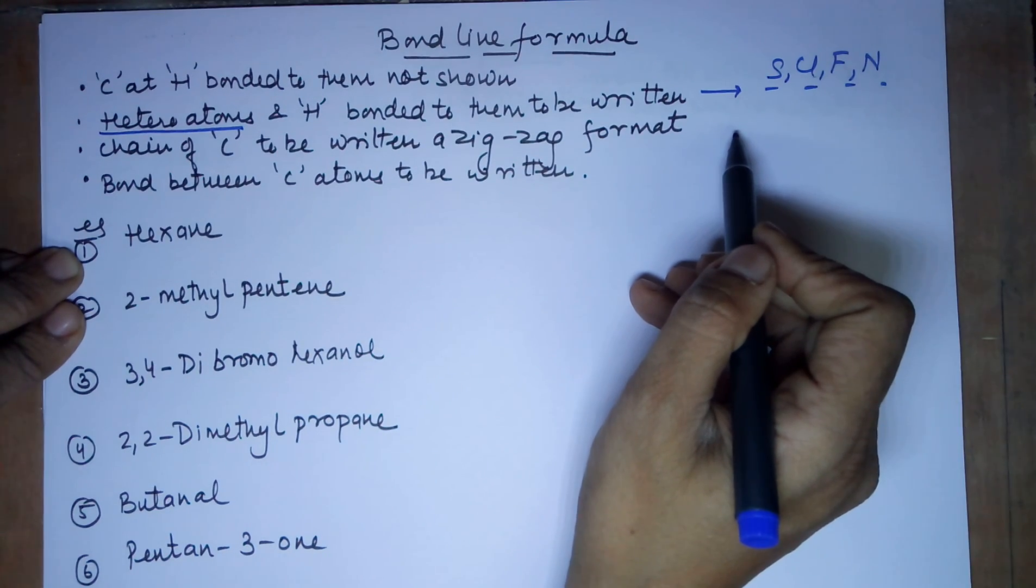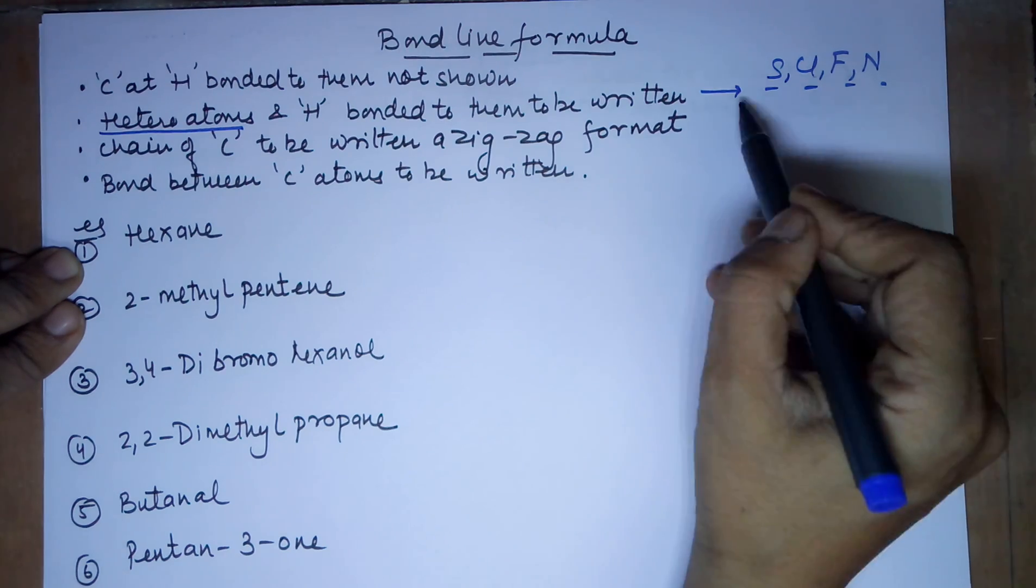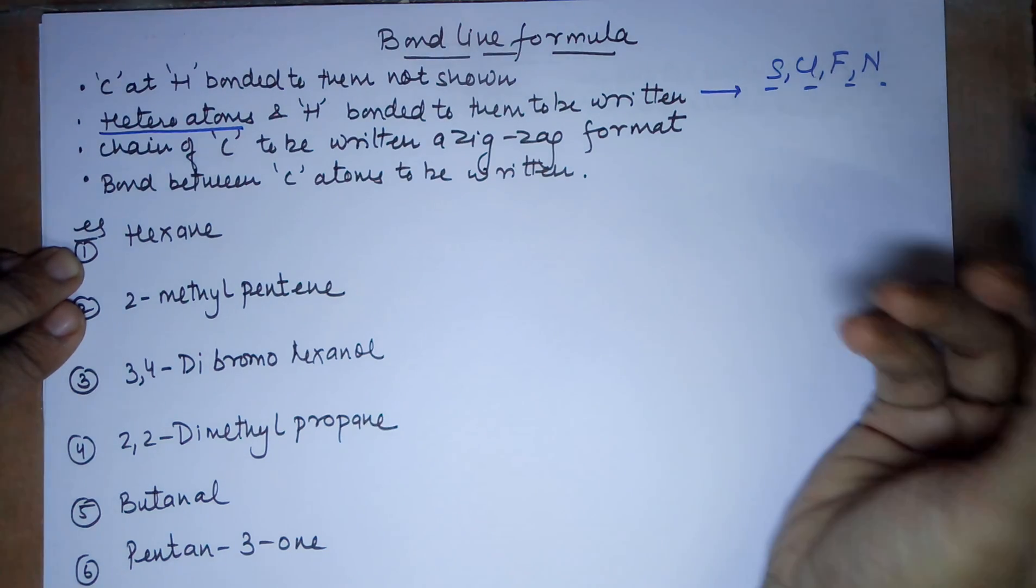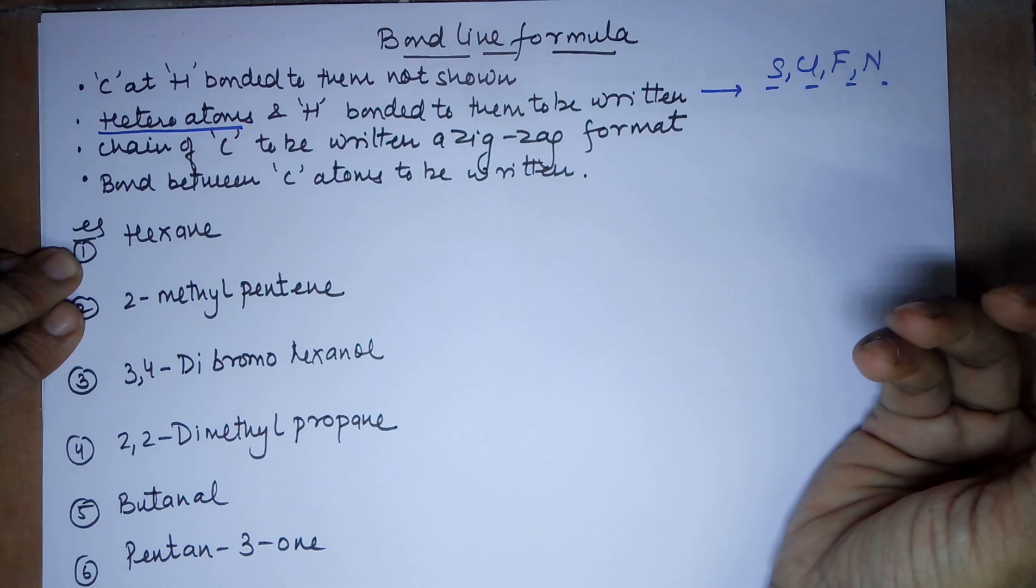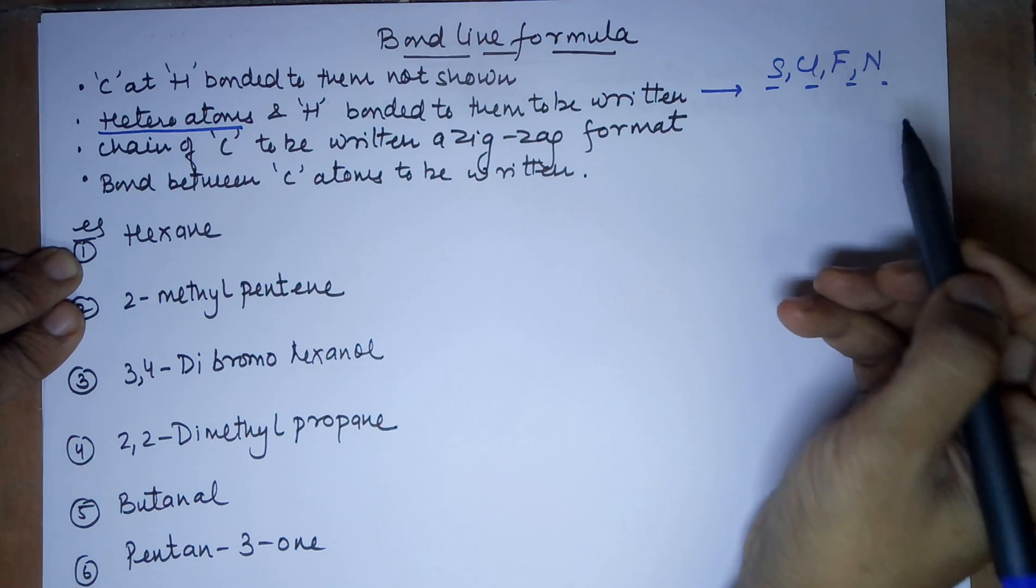So, your bond line formula will not have carbons and the hydrogens attached to them, but if there is any heteroatom other than carbon and if that particular atom also has a hydrogen attached to it, then that hydrogen is to be shown, the heteroatom is also to be shown.